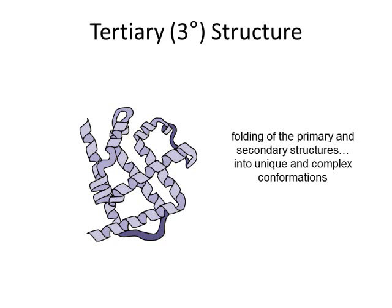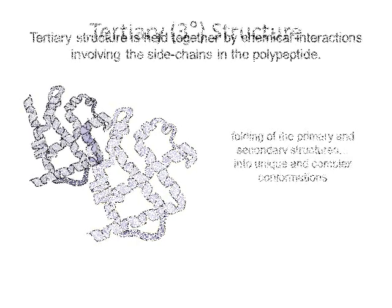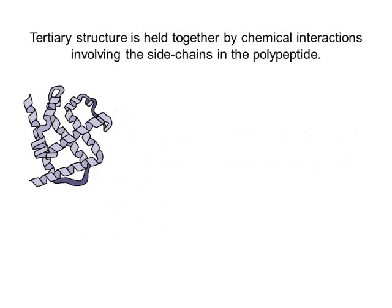Notice in this structure you can still see alpha helices, and you can probably even spot some areas that resemble beta sheets. The final tertiary structure of this polypeptide is the result of folding of the folding. All of this folding is held together by interactions either between amino acid side chains with other side chains, or interactions between amino acid side chains and the surrounding environment — which, remember, in the human body is always dominated by water.